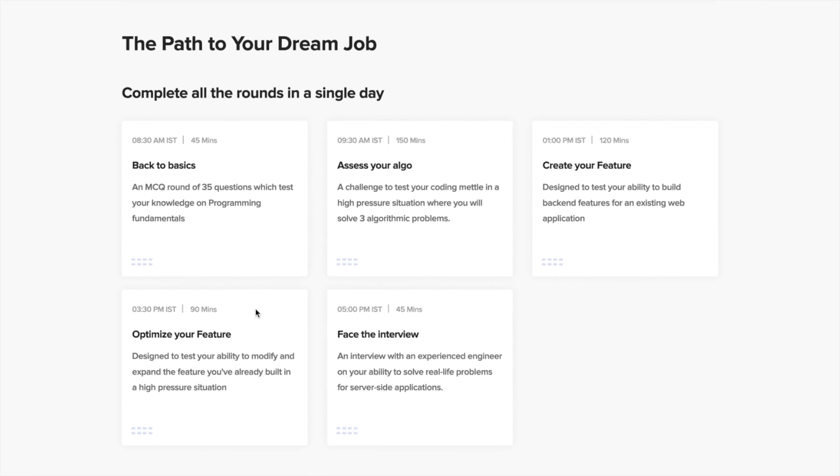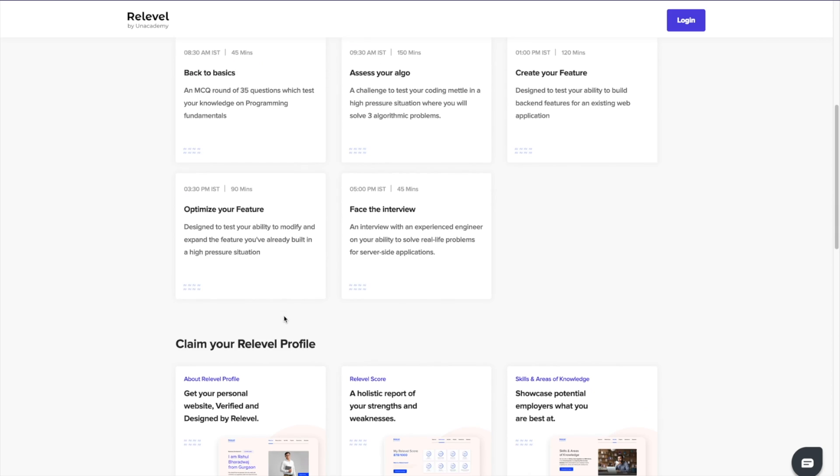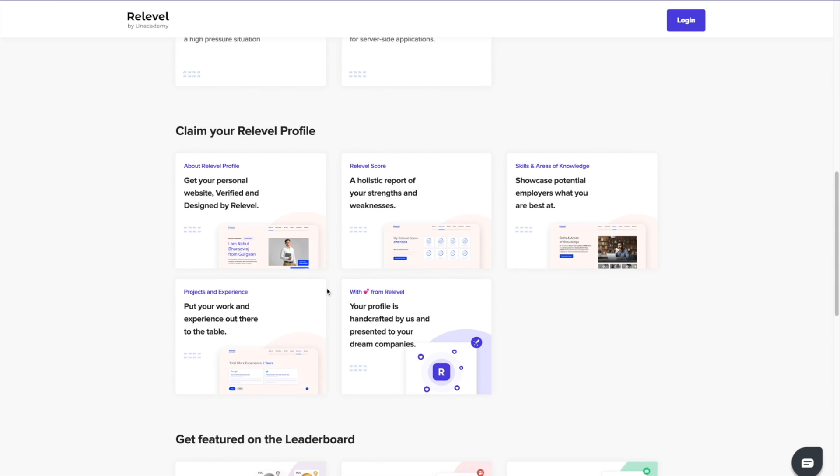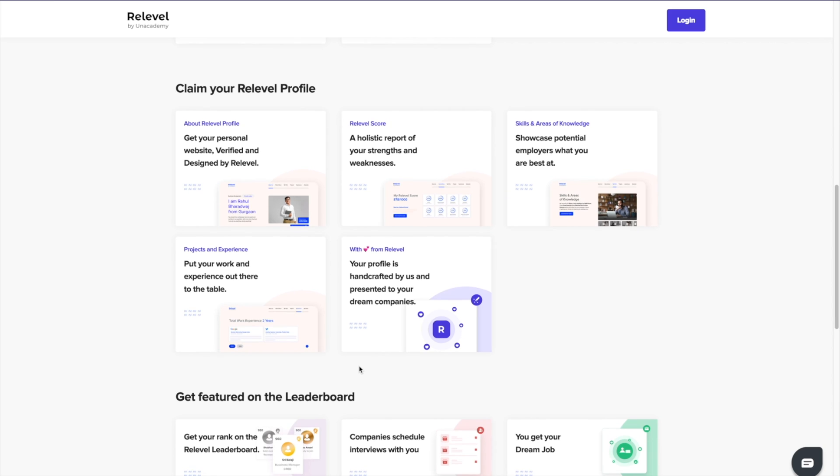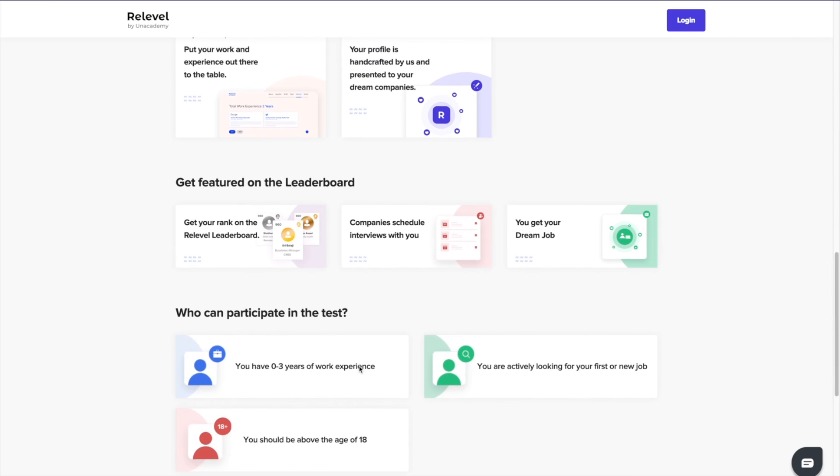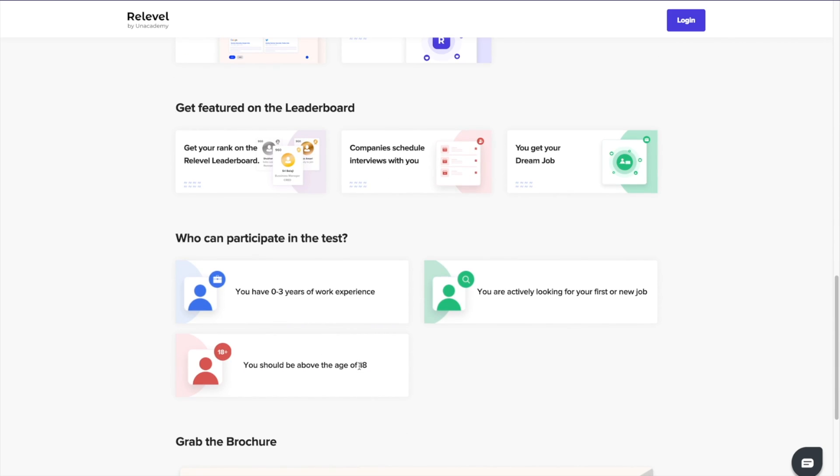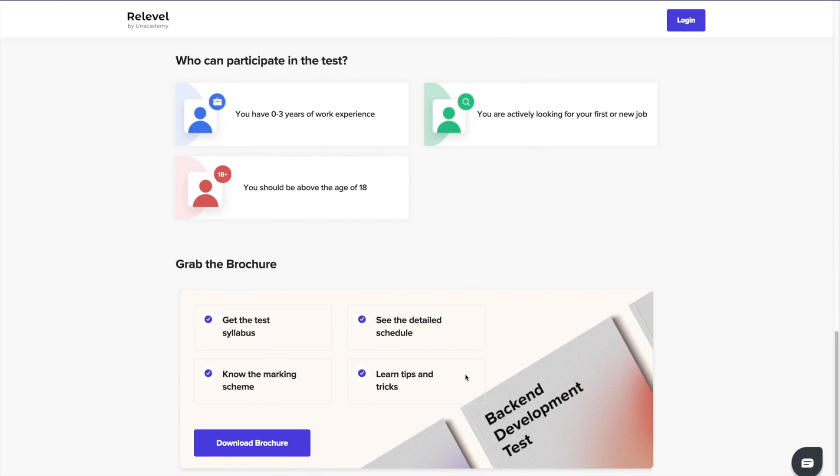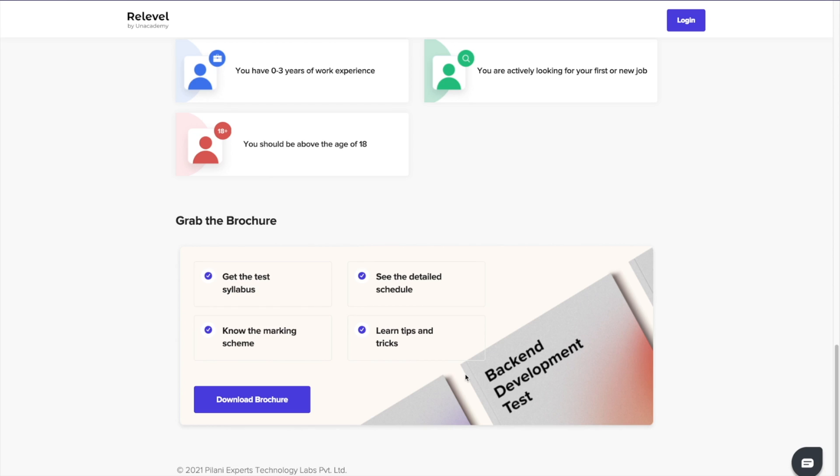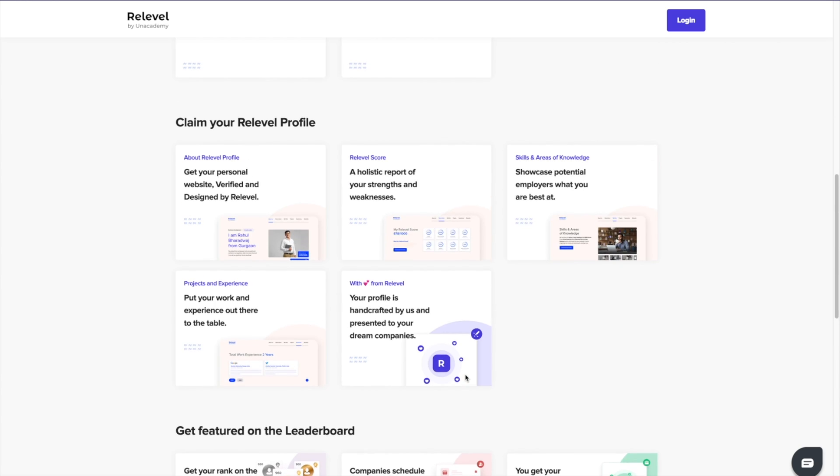Just register for the Relible test conducted by Relible by an academy and you'll get a chance to apply for front-end, back-end and business development roles at India's top startups and unicorn companies. Relible has 1000 plus openings, 550 plus companies and the best thing is, it's absolutely free. So please make sure you check out all the links in the description and give the Relible test as soon as possible.